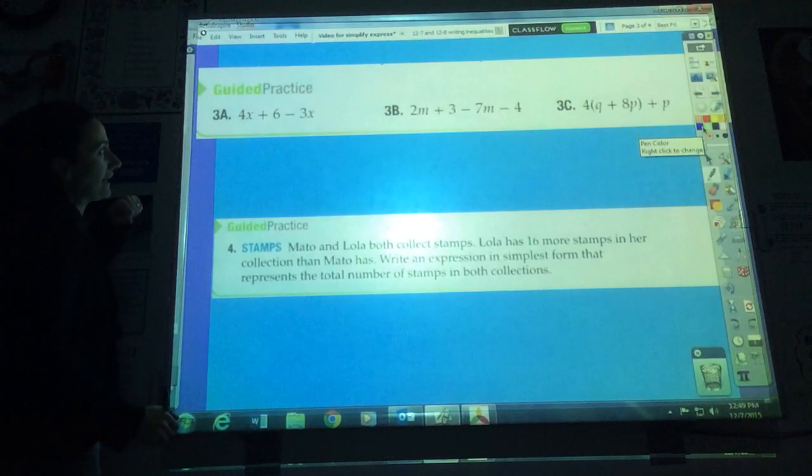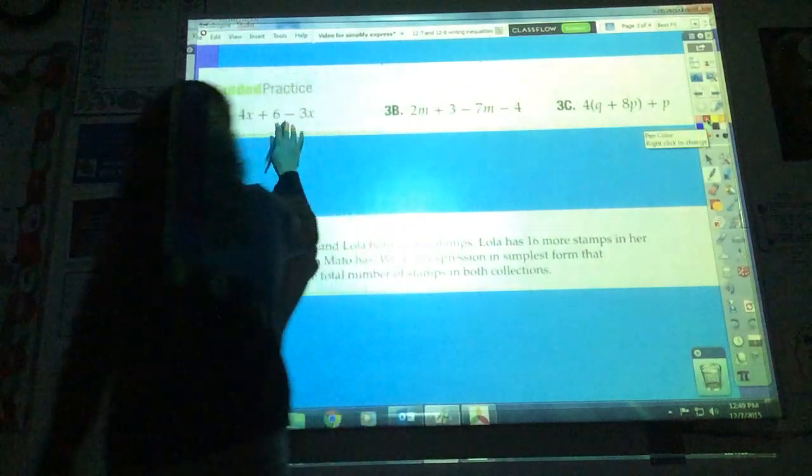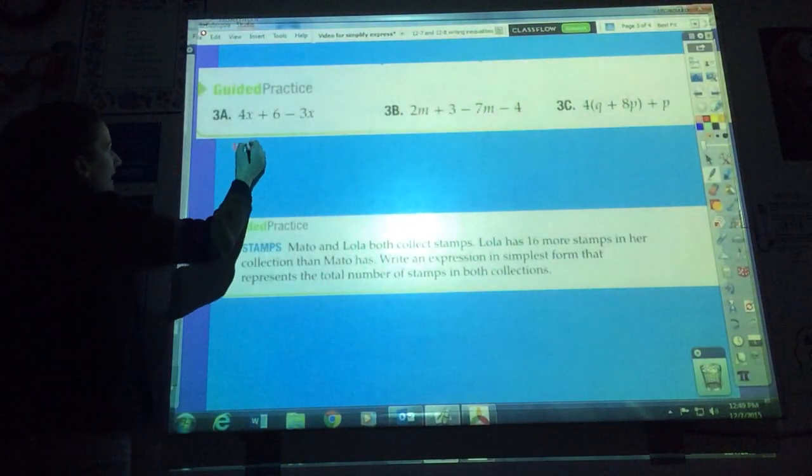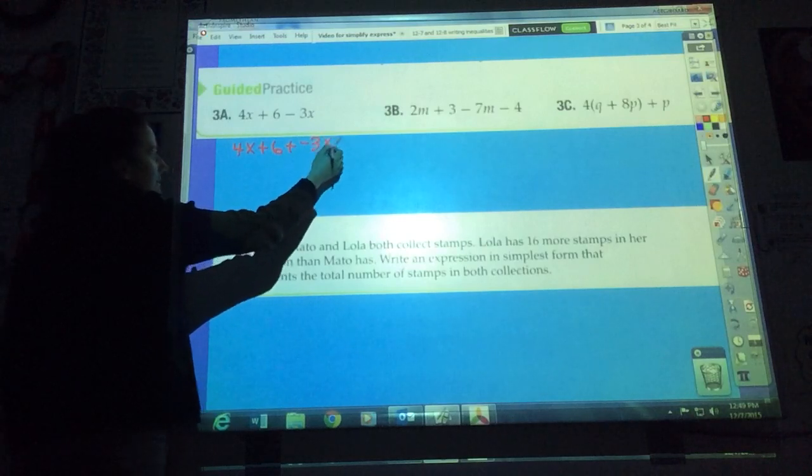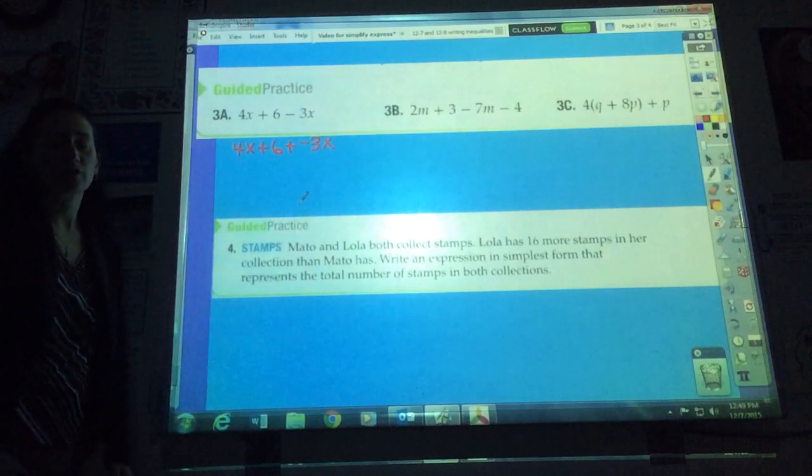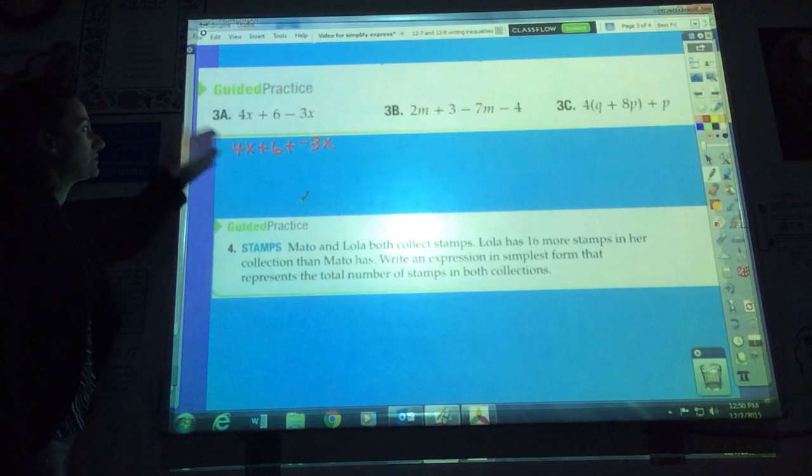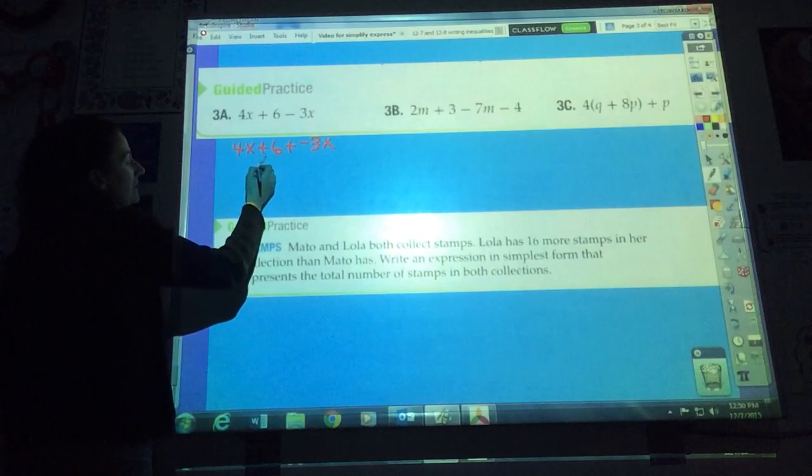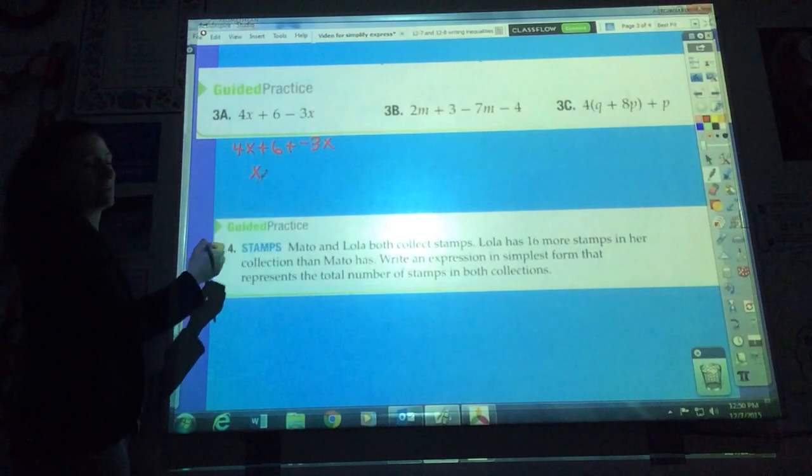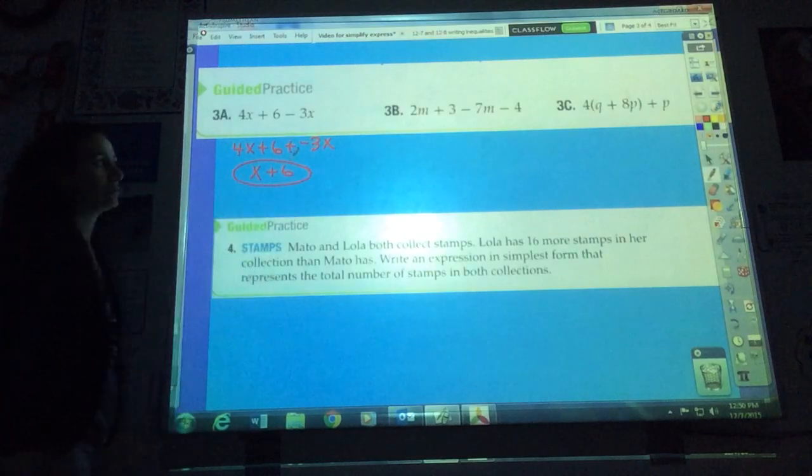Step 1, you're going to rewrite that with only addition. So I'm going to rewrite it as 4x plus 6 plus negative 3x. Step 2, look for a distributive property. I don't have any distributive property to do here, so I can go to step 3, which is to combine like terms. 4x and negative 3x is 1x, or I can just write x. And I've got that 6. Get that one right.